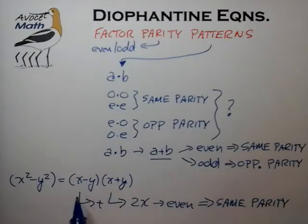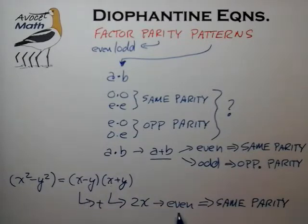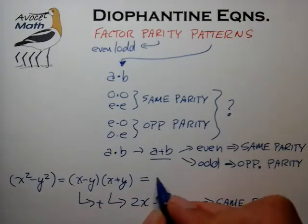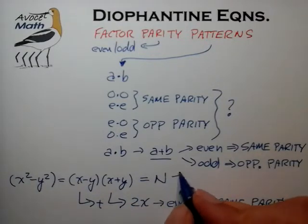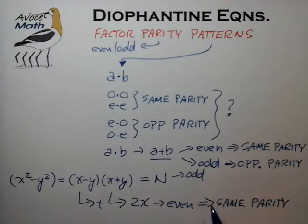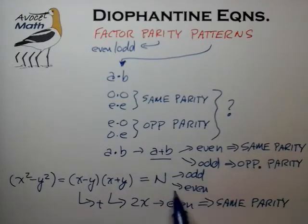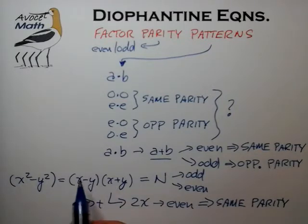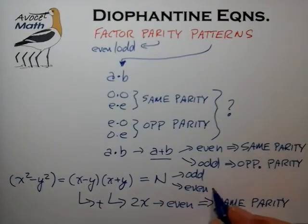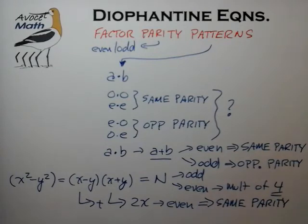So x squared minus y squared can be broken up into two factors, and we can conclude that those factors must be of even parity. If we're trying to solve a problem where that expression equals n, then if n is odd it indicates one thing. If n is even, then since the factors are of the same parity, each factor must contribute a factor of 2 — meaning if n is even, it must also be a multiple of 4. And that is sometimes an important finding.